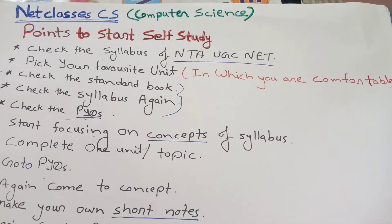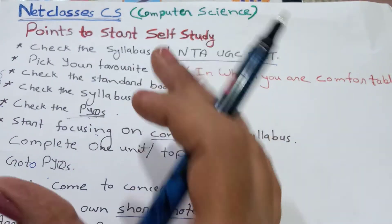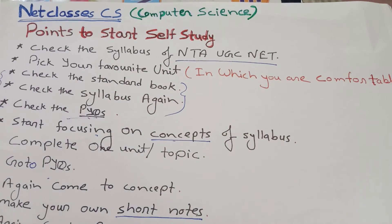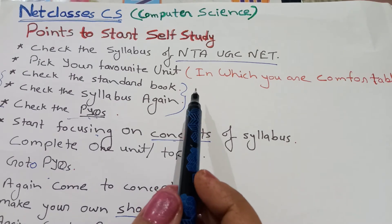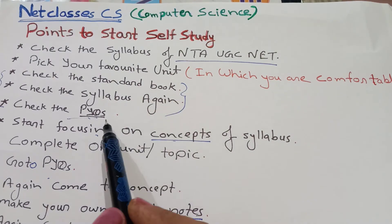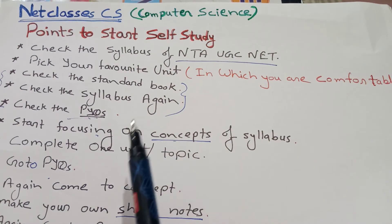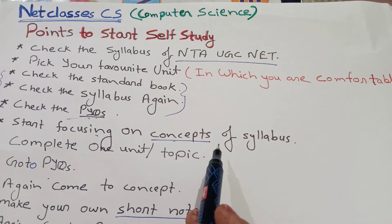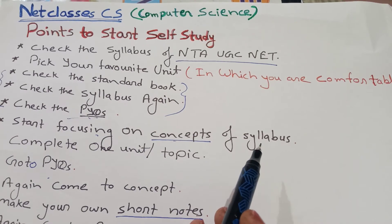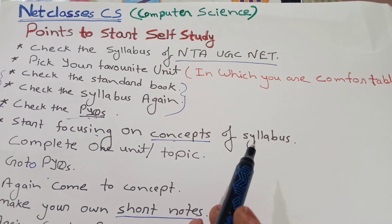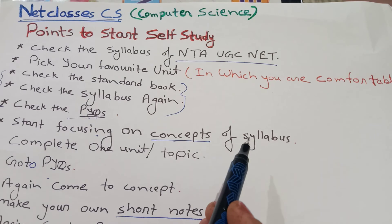Rahi baat hamare channel ki, to NET Classes CS par main aapko same yahi strategy poori follow karwaunga. Ismein main sabse pahle kal Artificial Intelligence ka syllabus lekar aaunga, us syllabus ka discussion, uske baad unke previous year questions ko main example ke liye aapko dikhaunga, aur phir uske concepts — ek ek topic ko main detail mein samjhaunga — aur usi tarah se main computer science ke total 10 units, saare subjects mein ek ek karke cover karwaunga.